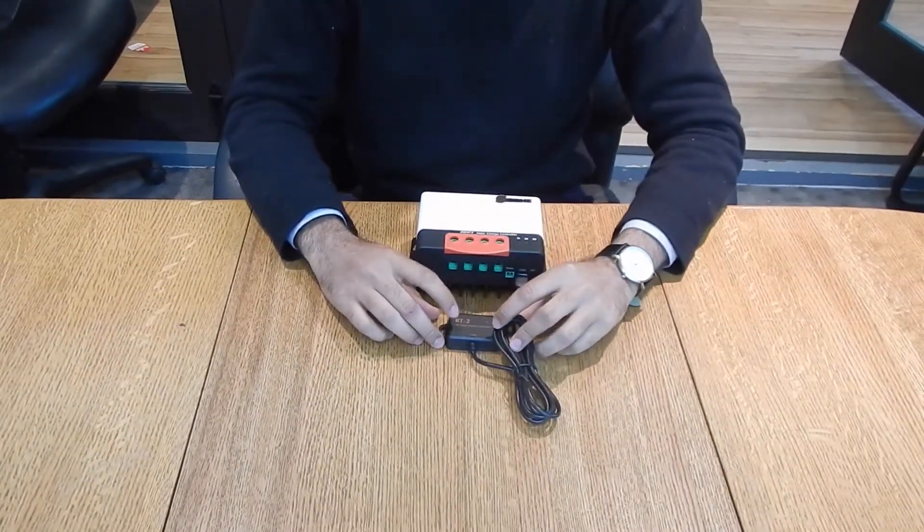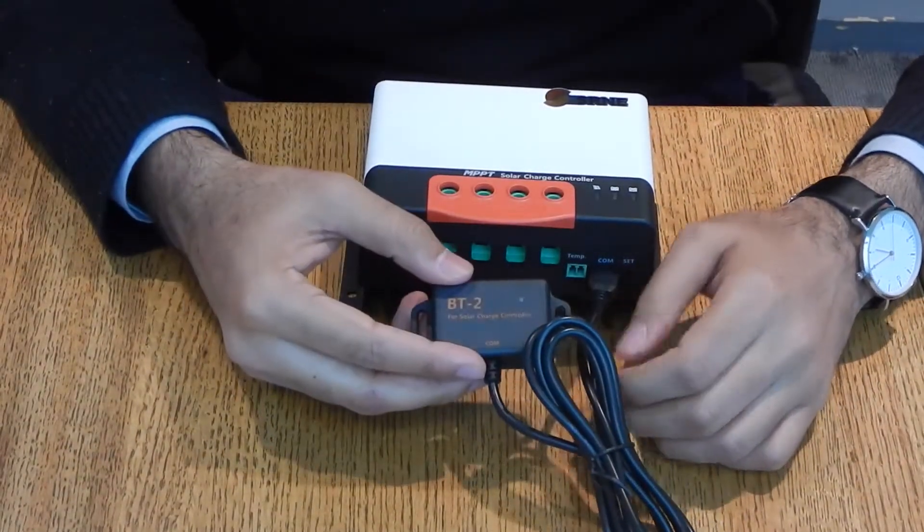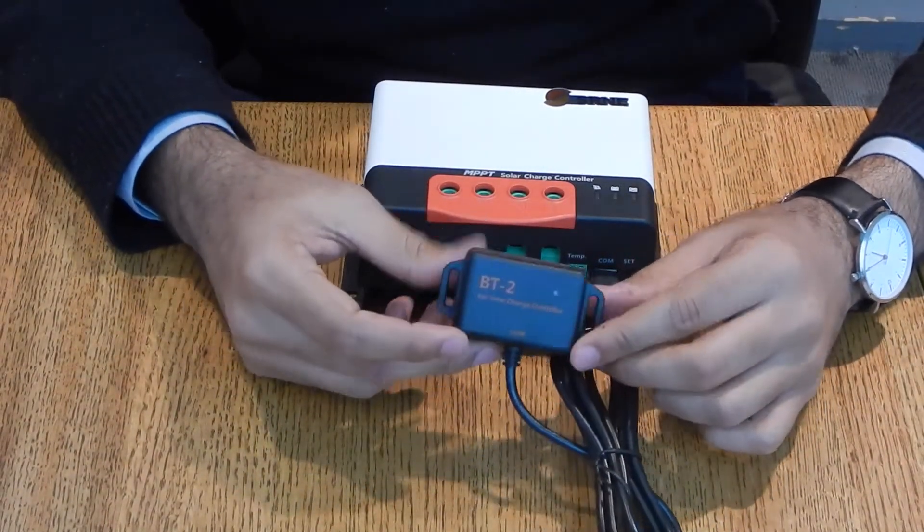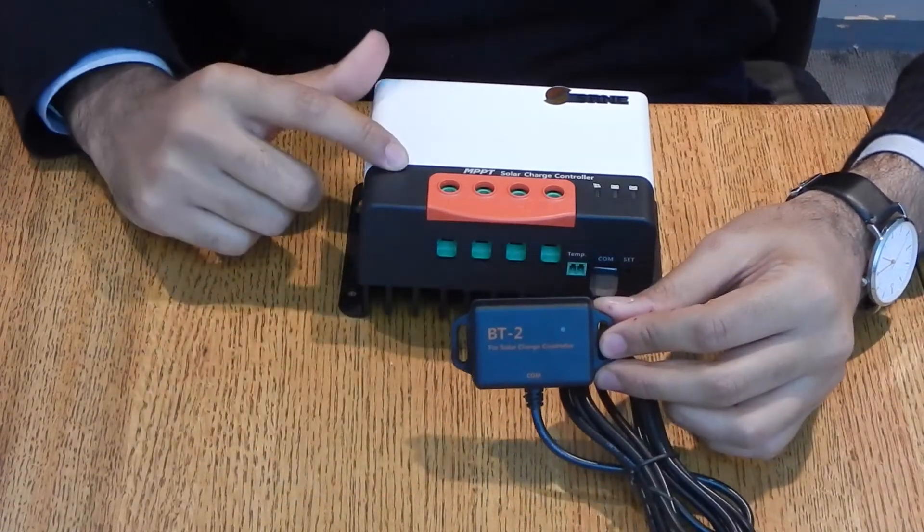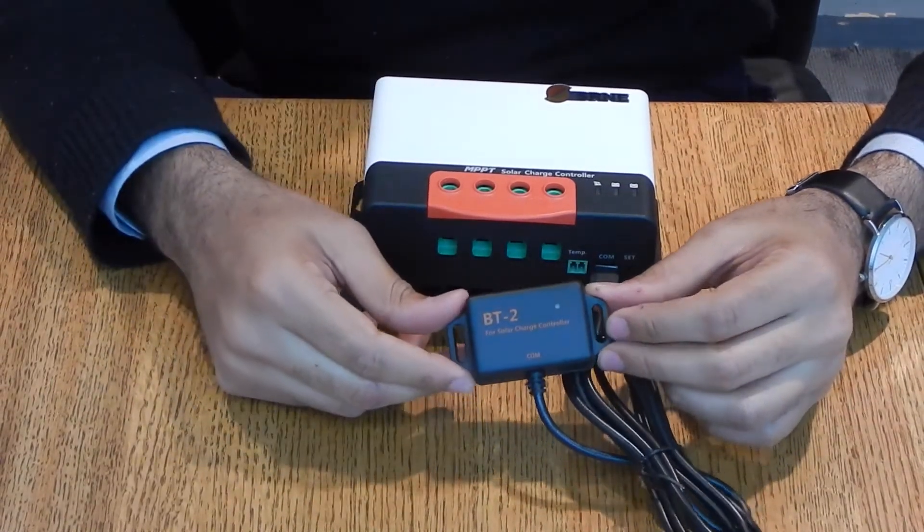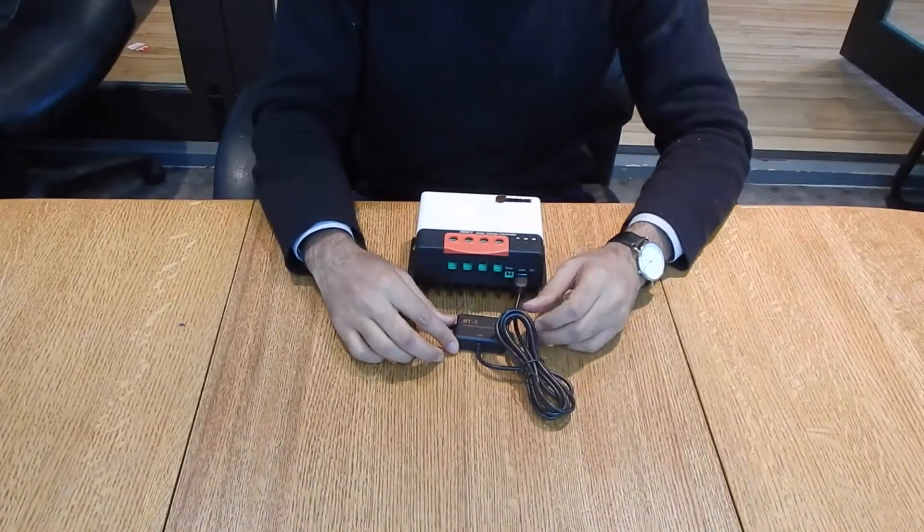So that's what the BT-2 is for. Apart from that, by installing the BT-2 solar app you can also control the battery type and check up on the status of your solar charger and do additional customizing settings as you want. So yeah, that's pretty much it.